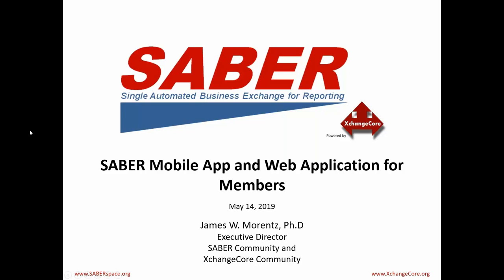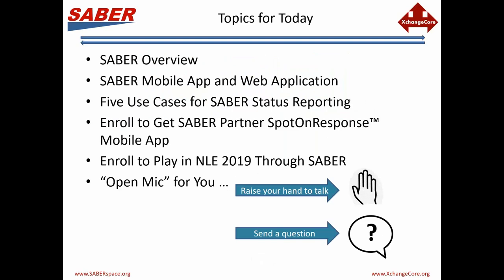What we're going to do is take a look at a few things. First of all, a quick look at SABR — we've got a handful of new people who we want to give some quick level setting for, about five minutes on SABR. Then we'll take a look at the mobile app and the web application, and then specifically five use cases for SABR status reporting that are things that all SABR members can do. I'm going to tell you how to enroll in that, and in particular how we're focusing on getting SABR members enrolled to play in National Level Exercise 2019, which through SABR anyone can play in from anywhere. Then we'll have an open mic.